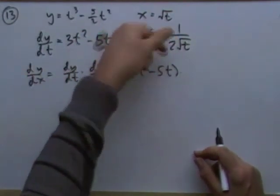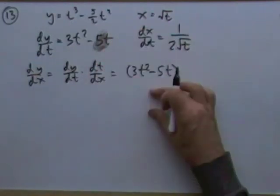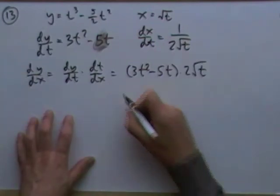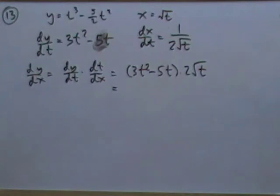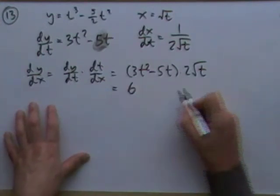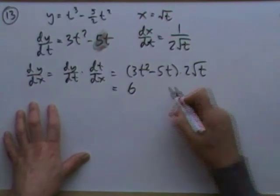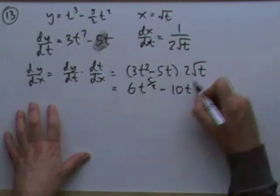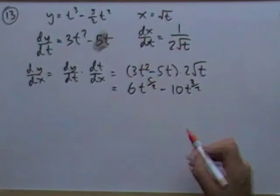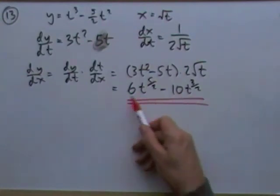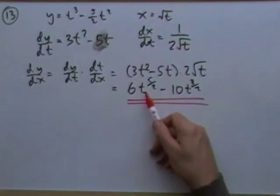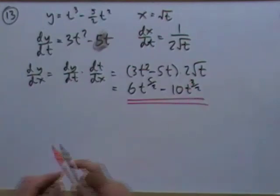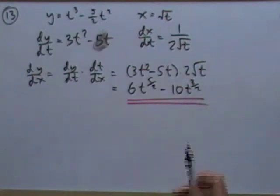So dy/dx = (3t² - 5t) × 2√t. Multiplying out with index form: 6t^(5/2) - 10t^(3/2). You could take out t^(1/2) as a common factor, giving 2√t(3t² - 5t), but there's a clash between index and radical notation — I'll leave it in the expanded form.